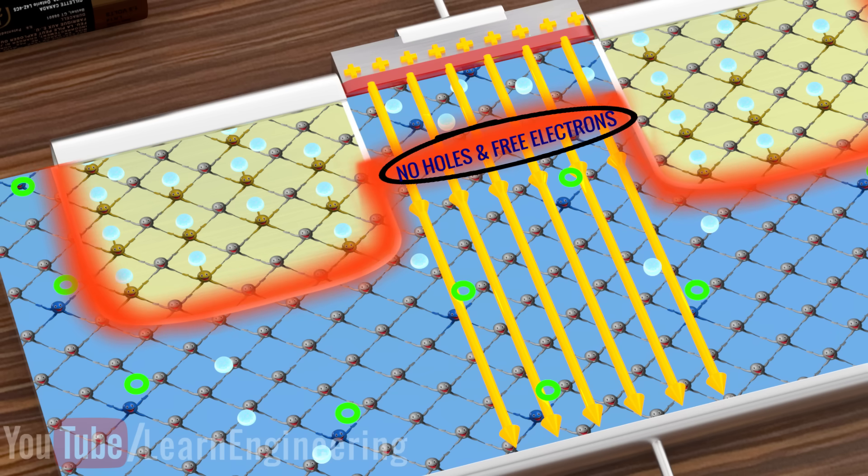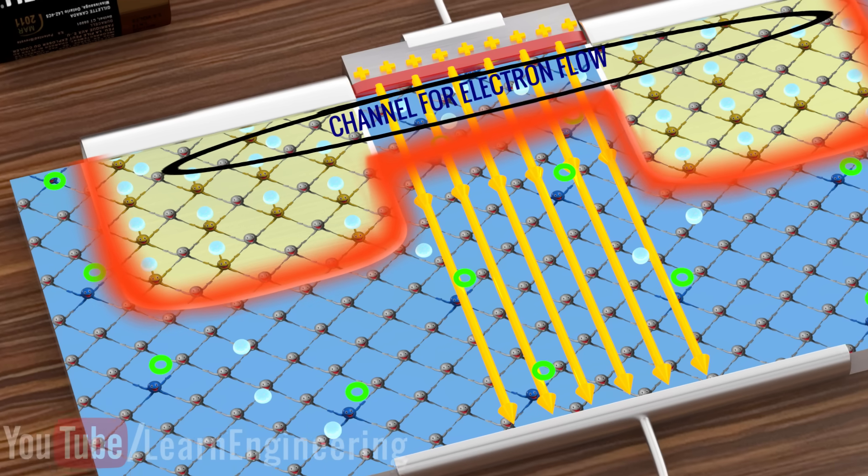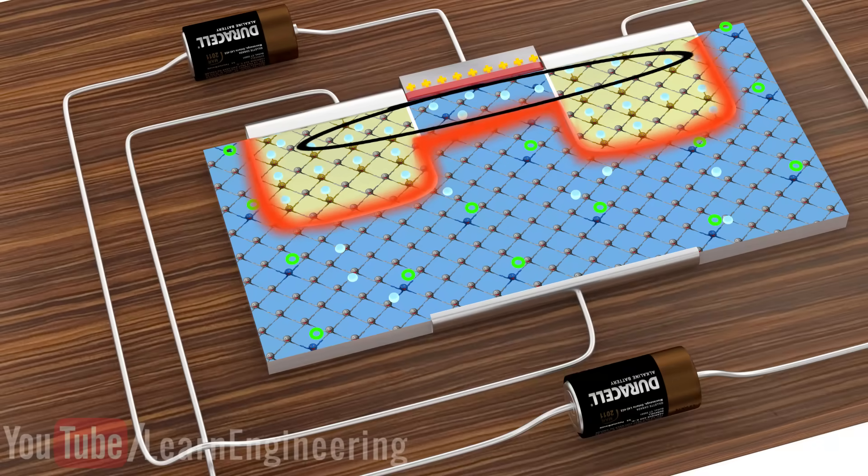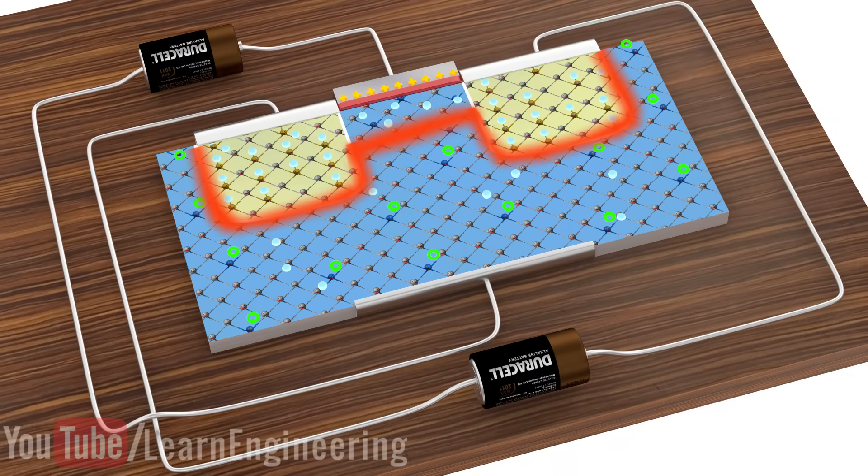You can see that this process essentially breaks the depletion region barrier, and a channel for the flow of electrons is created. If we apply a power source as we did at the beginning of this video, the electrons easily flow as shown. This is the way a MOSFET turns to the ON state.